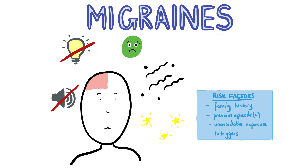Migraines are unilateral, pulsating headaches associated with aura, nausea, vomiting, photophobia and phonophobia. Symptoms may affect daily life, as they can be triggered or worsened by physical activity. Patients may report that going into a dark room or sleeping helps relieve the symptoms. Auras may precede the headache and last between 5-60 minutes. They are characterised by fully reversible visual symptoms, sensory symptoms or speech disturbance.